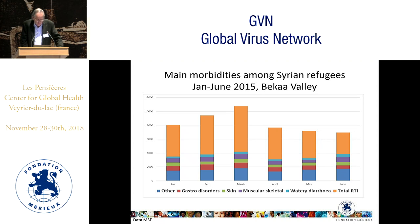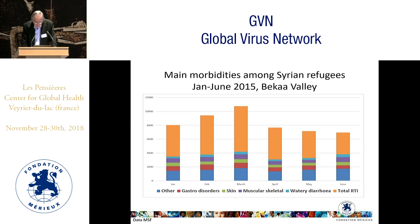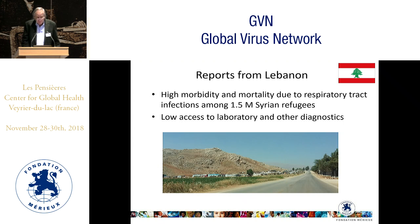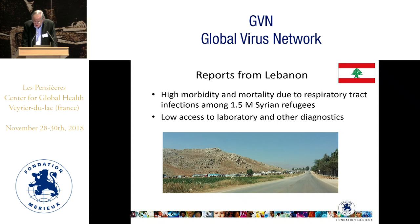MSF figures show the main morbidities among Syrian refugees in the Bekaa Valley. Almost 50% of primary healthcare visits are related to either upper or lower respiratory tract infections. Number two is diarrhea — predominantly watery diarrhea. There is high morbidity and mortality due to respiratory tract infections among Syrian refugees, partly due to almost no access to laboratory diagnostics. People working in primary healthcare settings work without any diagnostic support from the laboratory.